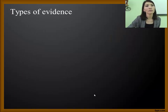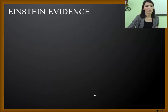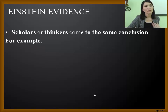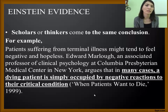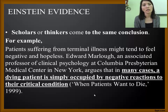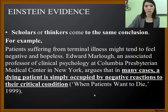Now let's consider the types of evidence. There are four main types: Einstein evidence, example evidence, fact evidence, and anecdotal evidence. Einstein evidence talks mostly about scholars' opinions that come to the same conclusion as your claim. For example: 'Patients suffering from terminal illness might tend to feel negative and hopeless. Professor Edward Marlow, an associate professor of clinical psychology at Columbia Presbyterian Medical Center in New York, argues that in many cases a dying patient is simply occupied by negative reactions to their critical conditions.' It's important that in Einstein evidence, the writer provides information about who the scholar is and from what university, to show more credibility.